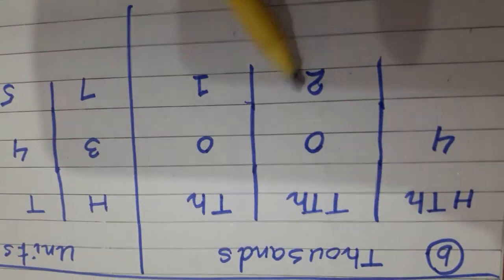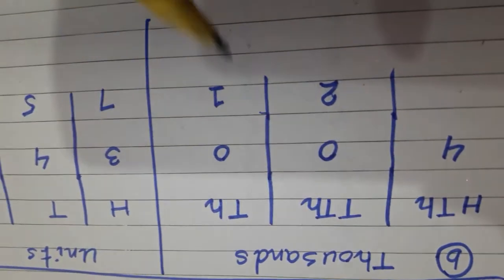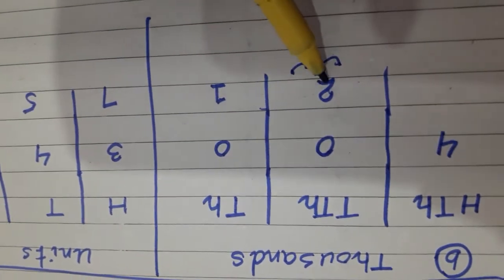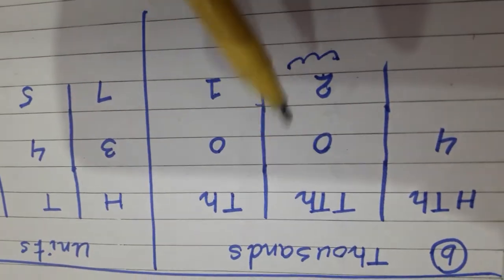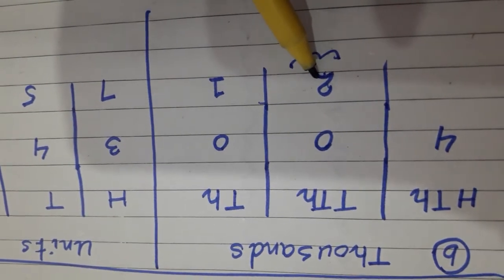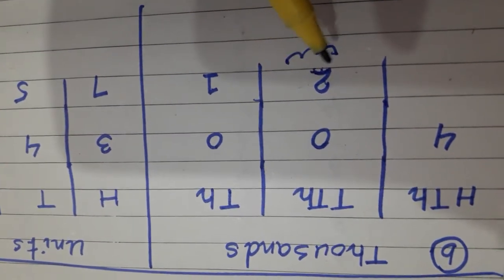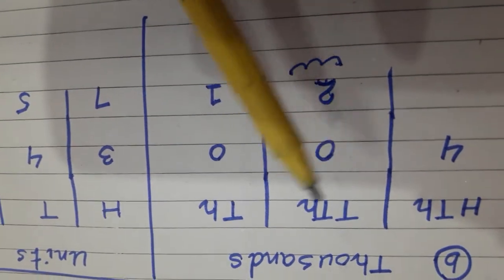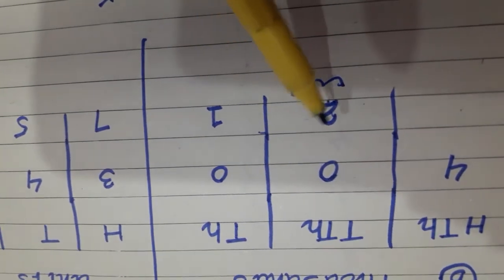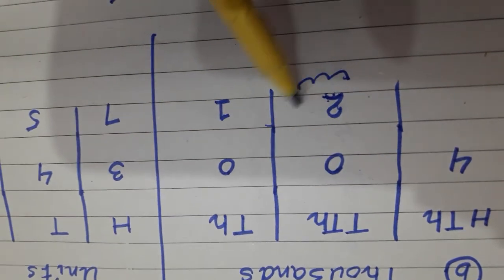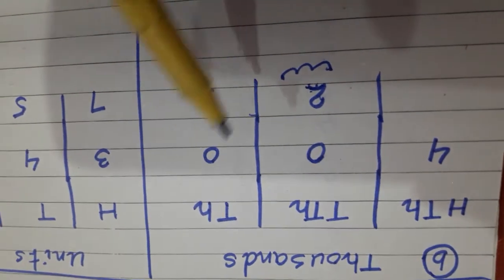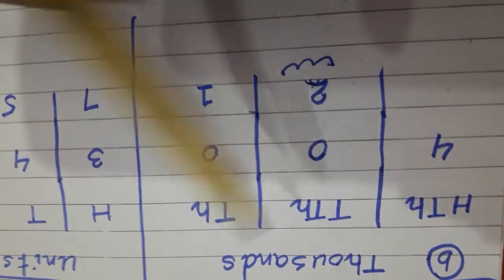Two is in the place of ten thousands — we have to know the place value of this number. Two is in the ten-thousands place, so it becomes twenty, because tens numbers are ten, twenty, thirty, forty, fifty. In tens numbers we add zero, so it becomes twenty thousand. So the answer is twenty thousand.